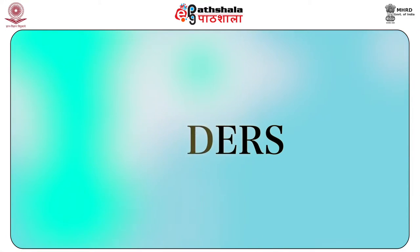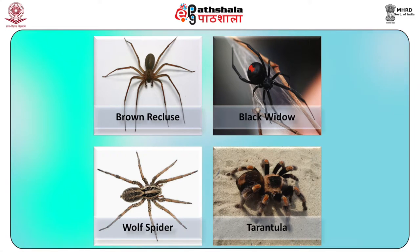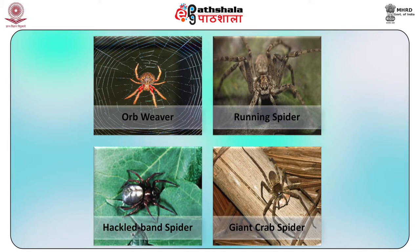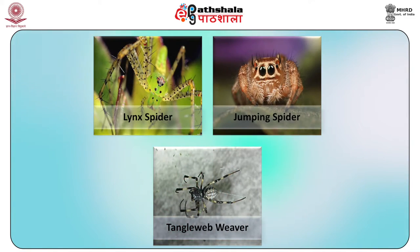Next we will study about spiders. All spiders with the exception of two small groups are venomous. There are over one lakh species of spiders; however, only about 20 species cause serious envenomation in humans, while about 150 to 180 can cause significant toxicity. The common Indian species that cause serious envenomation include the brown recluse, black widow, wolf spider and tarantula. Other spiders such as orb weaver, running spider, hackled band spider, giant crab spider, lynx spider, jumping spider and the tangleweb weaver, also encountered in India, do not cause significant envenomation.